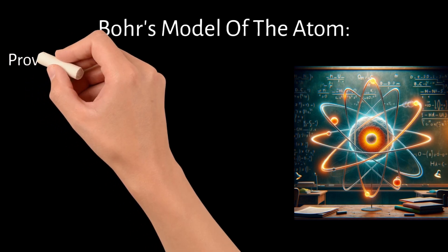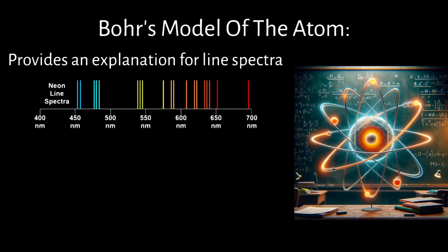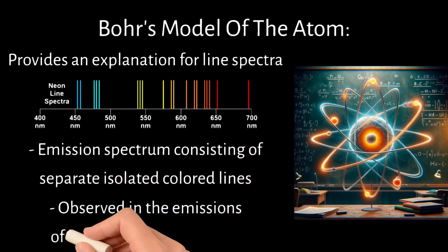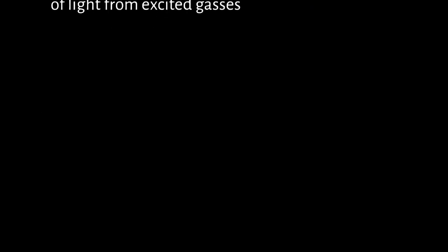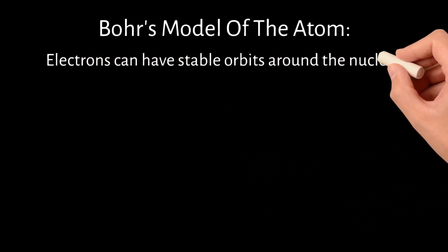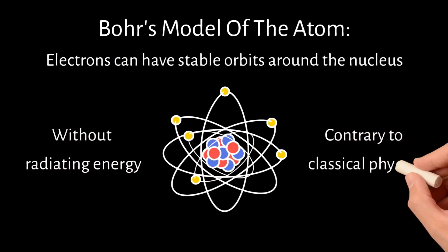Bohr's model of the atom is a key concept in early quantum physics and provides a fundamental explanation for the line spectra, an emission spectrum consisting of separate, isolated colored lines observed in the emissions of light from excited gases. Niels Bohr proposed this model to explain how electrons can have stable orbits around the nucleus without radiating energy, contrary to what classical physics suggested.